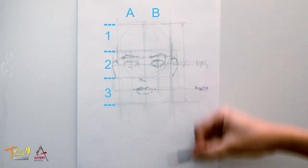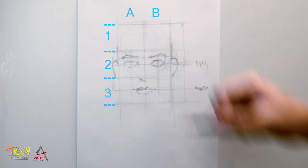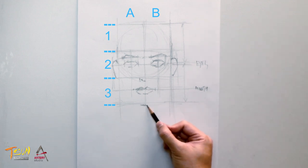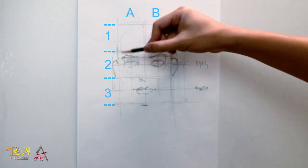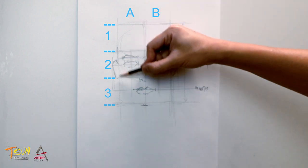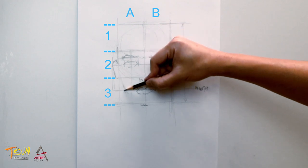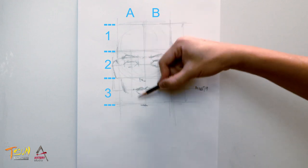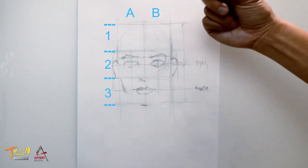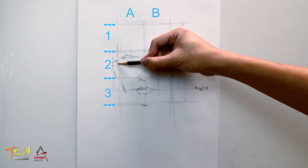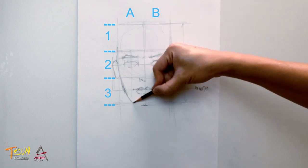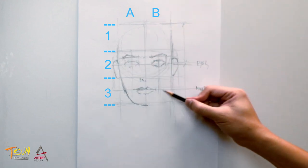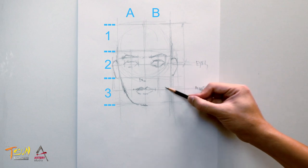Now we draw the face outline. The chin line is at the bottom blue line of the third grid row. There is a turning point on the face where the jaw is located, around the level of the mouth. Join those lines and do the same to the other side of the face.